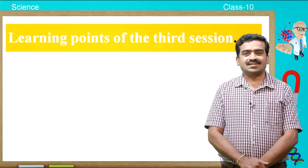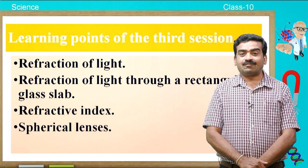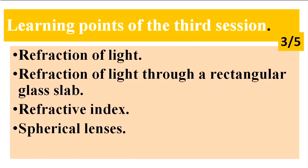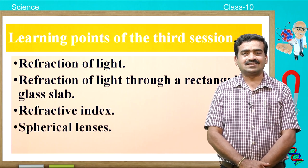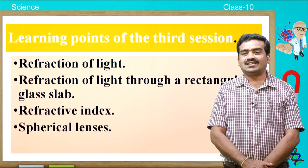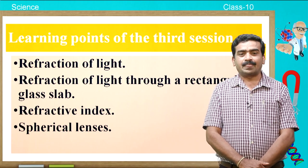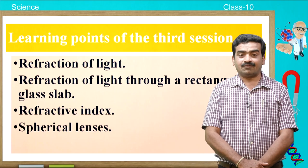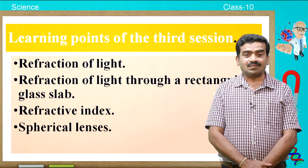My dears, in the last class we have learnt the following important points: refraction of light, how refraction takes place when a ray of light travels from one medium to another medium, and refraction of light through a rectangular glass slab. We also discussed the laws of refraction — there are two laws — and you have learnt the statement of each law. We also learnt about refractive index and absolute refractive index, and finally, we learnt about spherical lenses.